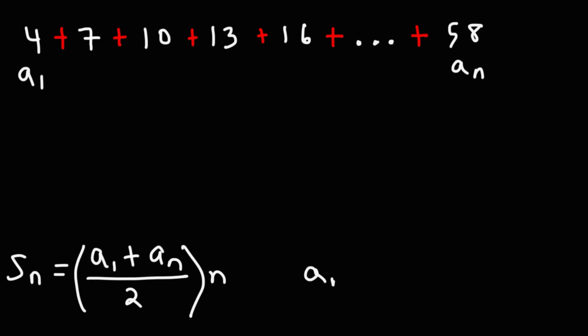And we could use this formula to get the value of n. a sub n is equal to a sub 1 plus n minus 1 times d. Now, we know what a sub 1 is. The first term is 4. We don't know the value of n. d is the common difference. To go from 4 to 7, we need to add 3. And to go from 7 to 10, we need to add 3. So the common difference is 3.